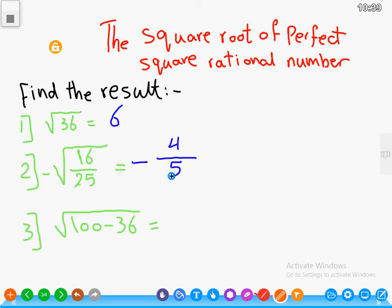Three: root 100 minus 36. At the first, we will find the result of 100 minus 36. The result will be 64, then the root of 64 equals 8.